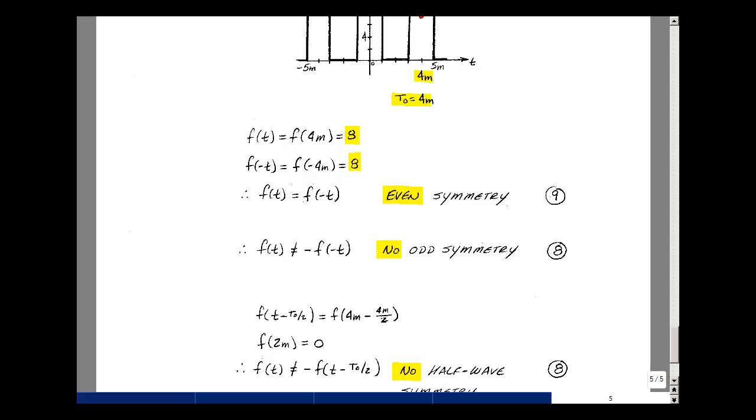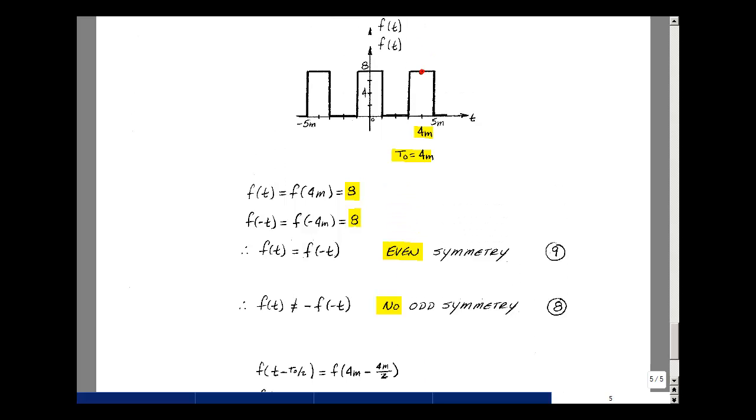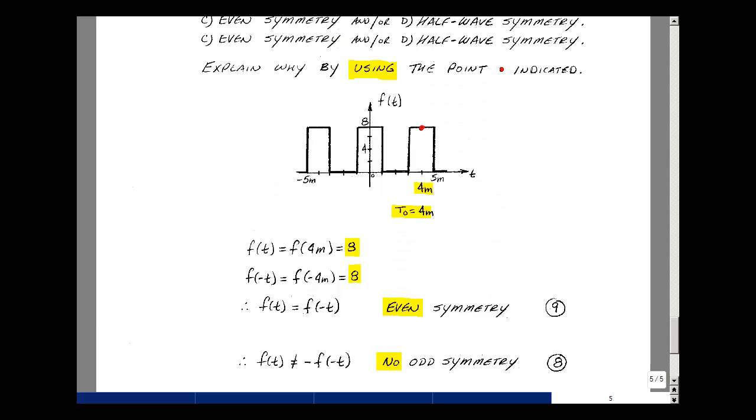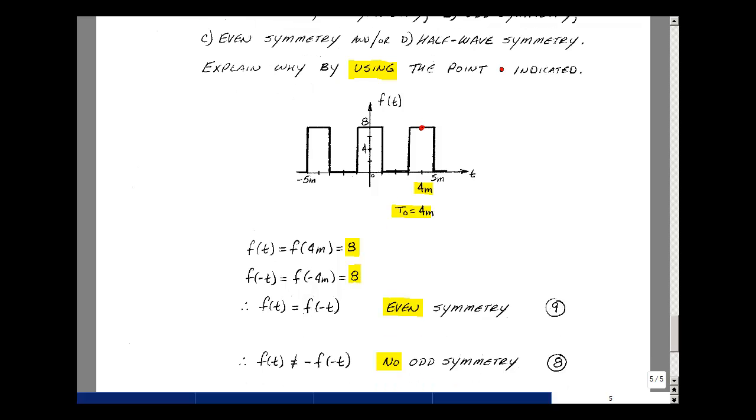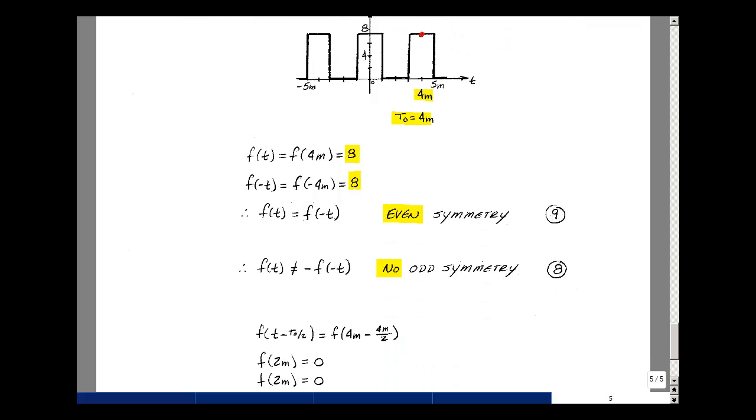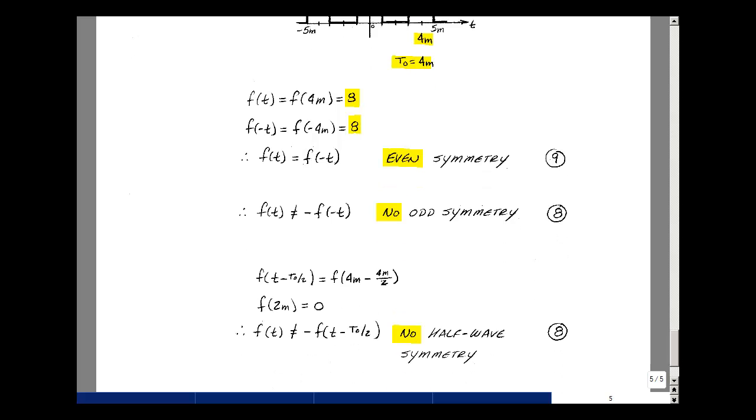When you get these contradictions, they're pretty much final in that we've shown a single point that doesn't satisfy our definitions of symmetry. But when you do get an agreement with a single point, you should also check slopes or doing the mirror imaging that we did in class notes. Give nine points for the even symmetry answer and then eight points for the no odd symmetry and no half wave symmetry.